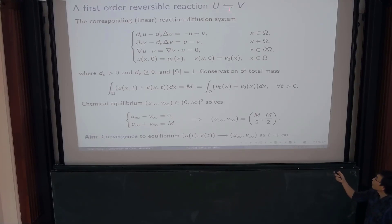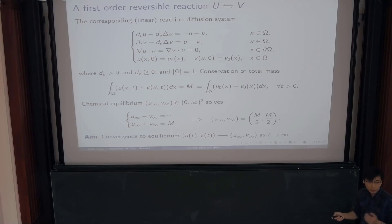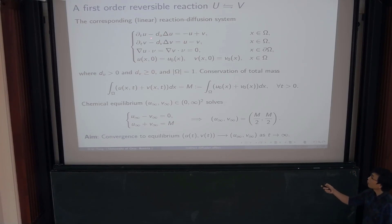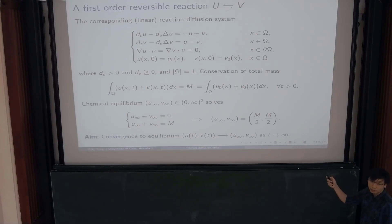The reaction rate constants for simplicity I just put to be one, because it doesn't change the analysis. So you can write down the system using, like Amsker's talk, the Fick laws for diffusion. Basically, you get the Laplacian diffusion for U and for V with different diffusion coefficients. For the reaction, you see that the equation for U has a minus U loss term from the forward reaction and a gain term plus V from the backward reaction. It's just a very simple system.